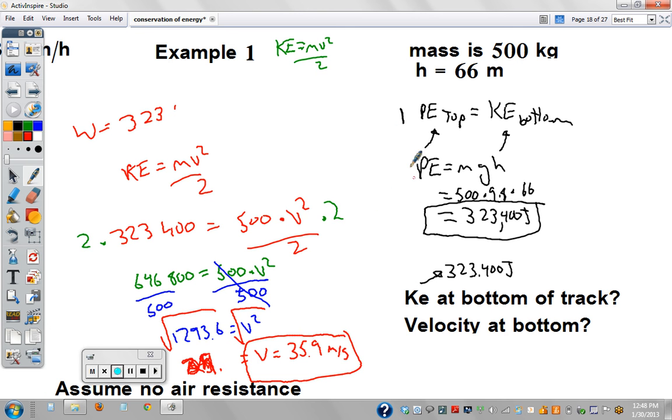In other words, step number two, to find velocity, use kinetic energy and mass to solve for velocity. So it's kind of a puzzle of stuff we've already done. We've used the kinetic energy formula before. We've used the potential energy formula before. We're putting it together in a new way.